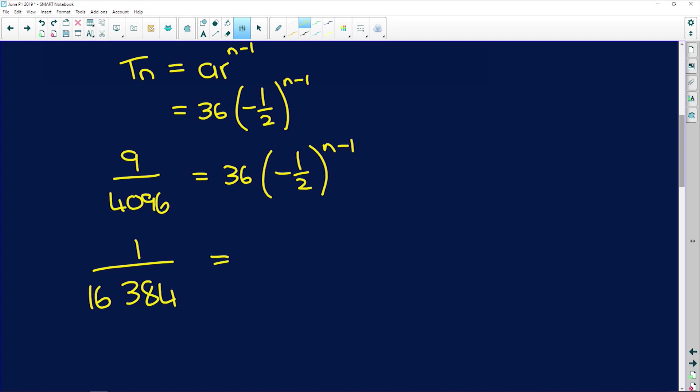So 9 divided by 4096 divided by 36 gives me 1 over 16,384, which is a big denominator. But the right hand side is still negative 1 half to the power of n minus 1.